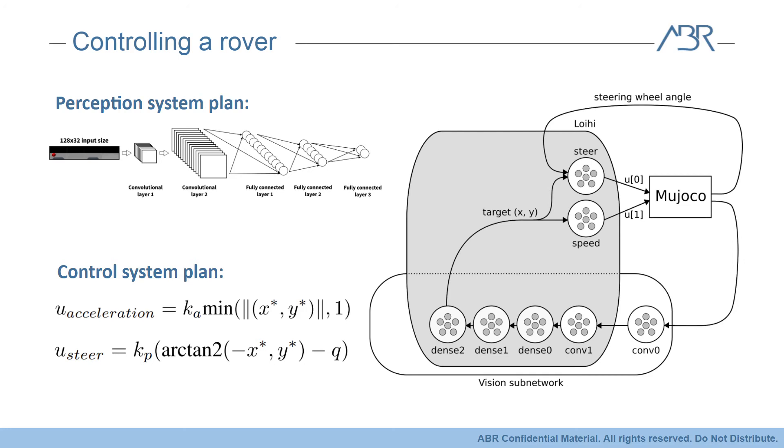And here's what the network architecture looks like. You can see, aside from one convolutional layer converting the Mujoco feedback into spikes, everything is running on the Loihi.